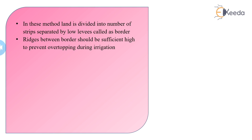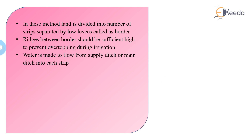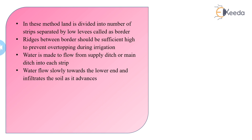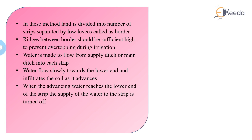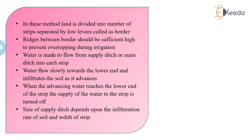The borders should be of sufficient height to prevent overtopping during irrigation. Water is allowed to flow from the supply ditch into each strip and flows slowly toward the lower end, infiltrating the soil as it advances. When the advancing water reaches the lower end of the strip, the supply is turned off. The size of the supply ditch depends upon the infiltration rate of the soil and the width of the strip. The slope varies from 0.2 to 0.8%, the width of the strip is generally 10 to 20 meters, and the length of the strip is 100 to 300 meters.